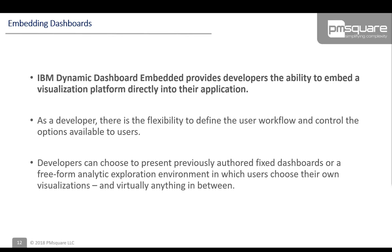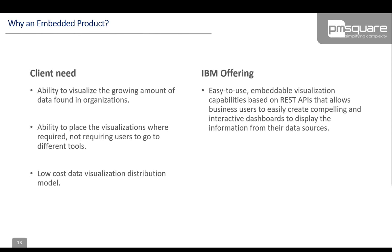The idea is to empower users greatly — not just when they're in Cognos but in other applications too — to turn data into insights and those insights into action. IBM recognized a few client needs: clients need the ability to visualize the growing amount of data, to place visualizations where required without requiring users to go into a separate tool, and this needed to be a cost-effective model without massive licensing concerns. What they came up with is an easy-to-use embeddable visualization capability based on REST APIs that allows business users to quickly create something compelling and interactive within their existing web applications.